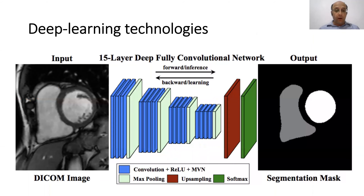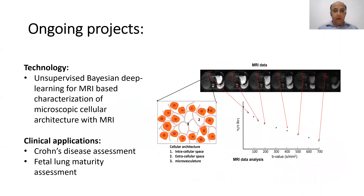Our goal in the lab is to leverage modern deep learning technologies to extract the required information from the MRI data. Some ongoing projects leverage current and newly developed deep learning technologies to characterize human body tissue by MRI, including characterization of the microscopic cellular architecture of tissue through unsupervised Bayesian deep learning methods.